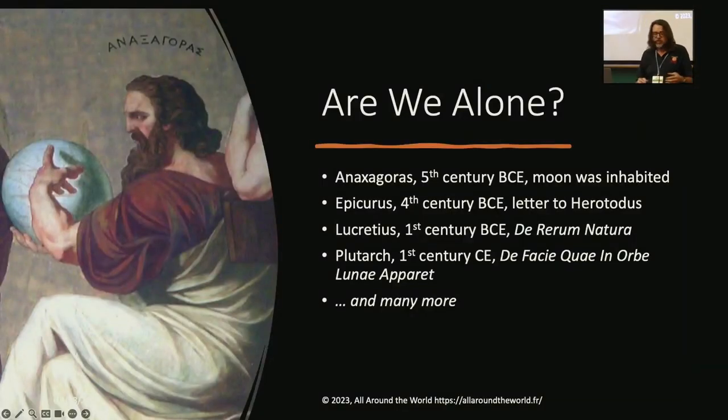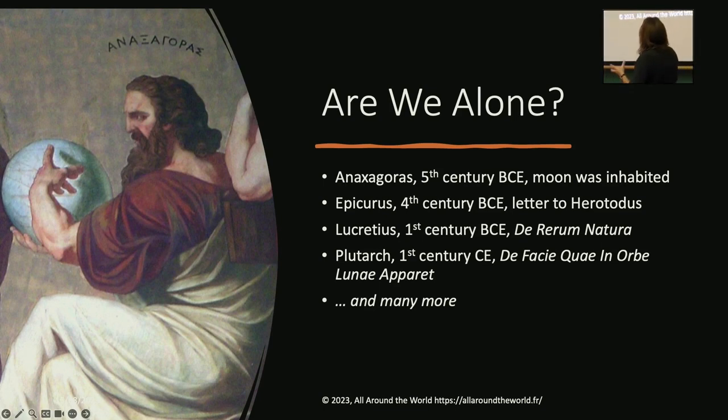Are we alone is a question we have asked ourselves as long as recorded history. Anaxagoras is the first recorded example I could find in the 5th century BCE. He postulated that the sun was a hot rock, the moon was a cold rock, that it were originally part of Earth, and that the moon was inhabited. And the ancient Greeks were so fascinated by this idea that they sentenced him to death. Epicurus also speculated about extraterrestrial life in 4th century BCE, Lucretius, Plutarch, others.